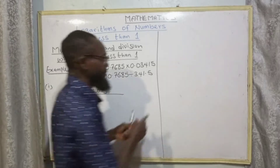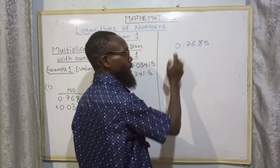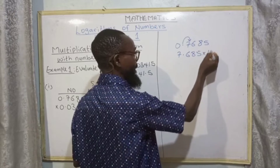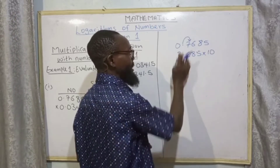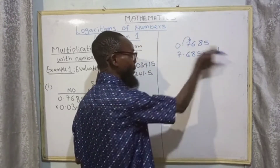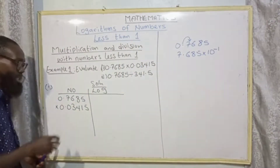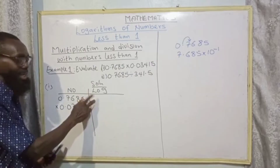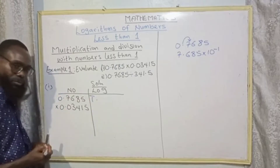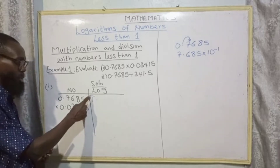In this case we are having decimal numbers before the digit numbers. In standard form, 0.7685 becomes 7.685 multiplied by 10 to the power of minus one. The minus here means how many zeros we have — one zero — so this is minus one. We call this bar one. The sign at the top of this one is called bar, so we call it bar one.